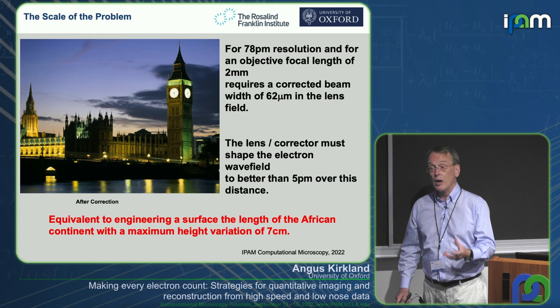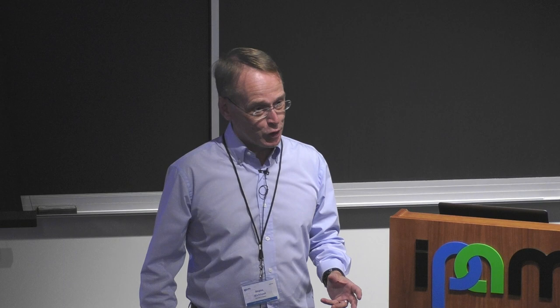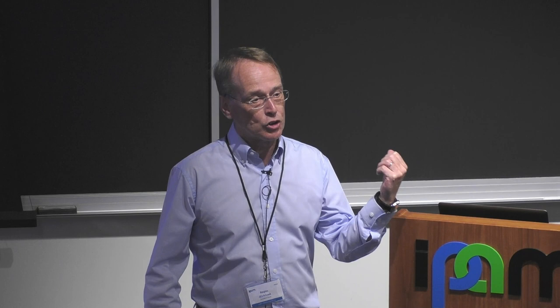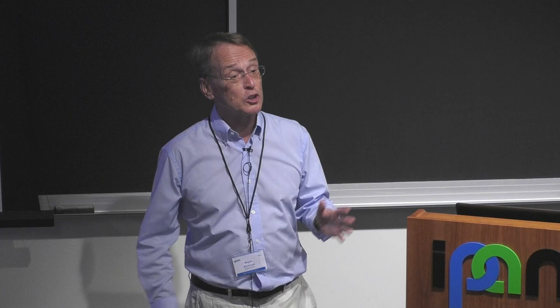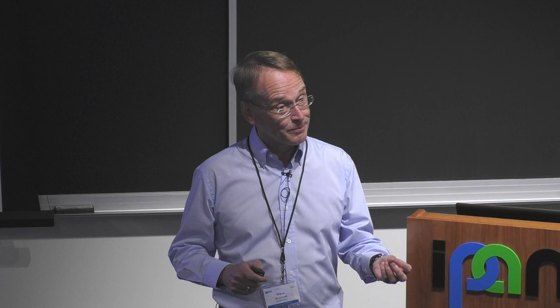Question: can aberrations be corrected computationally? You can measure all aberrations computationally and adjust for them, but adjusting doesn't increase the resolution. The aberrations act as functions of confusion — they pollute the image and introduce zeros. They remove data as well as corrupting data. Once data is removed, you can't recover it computationally.